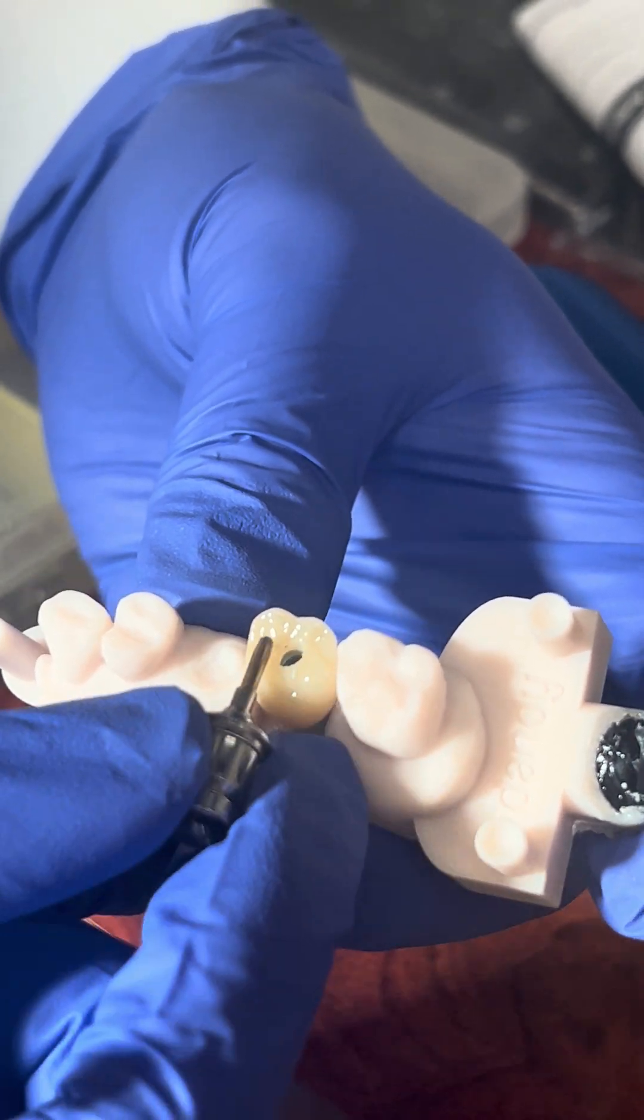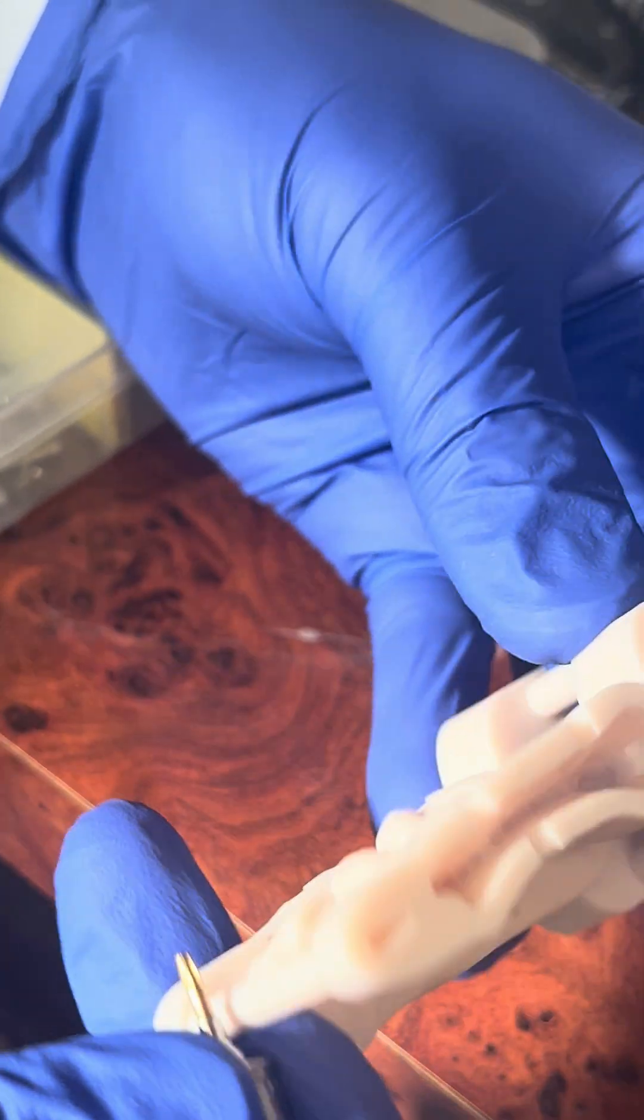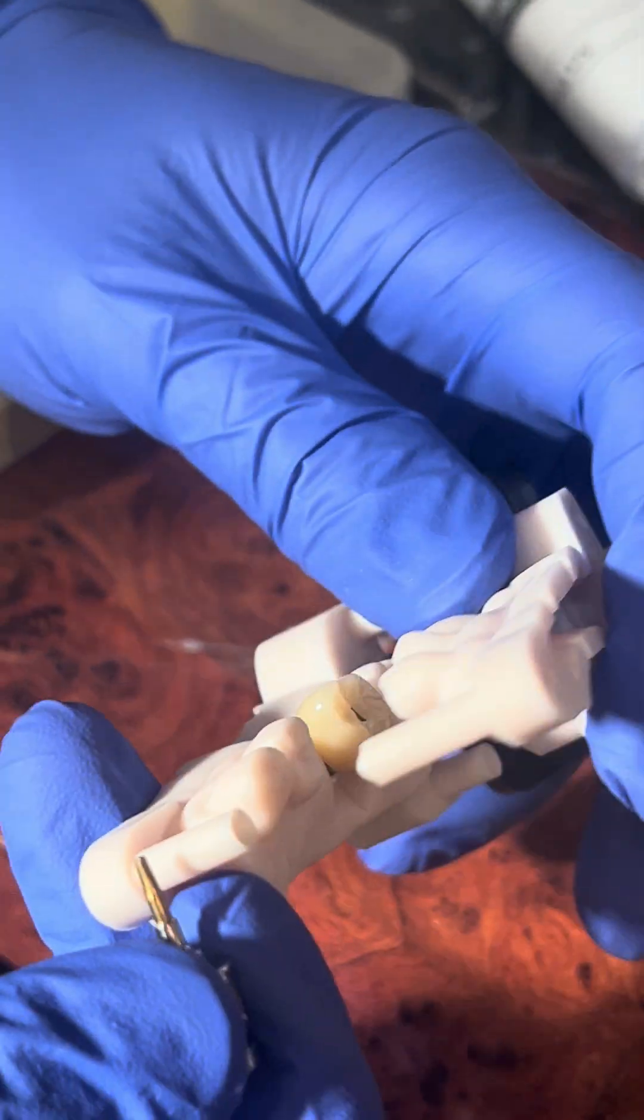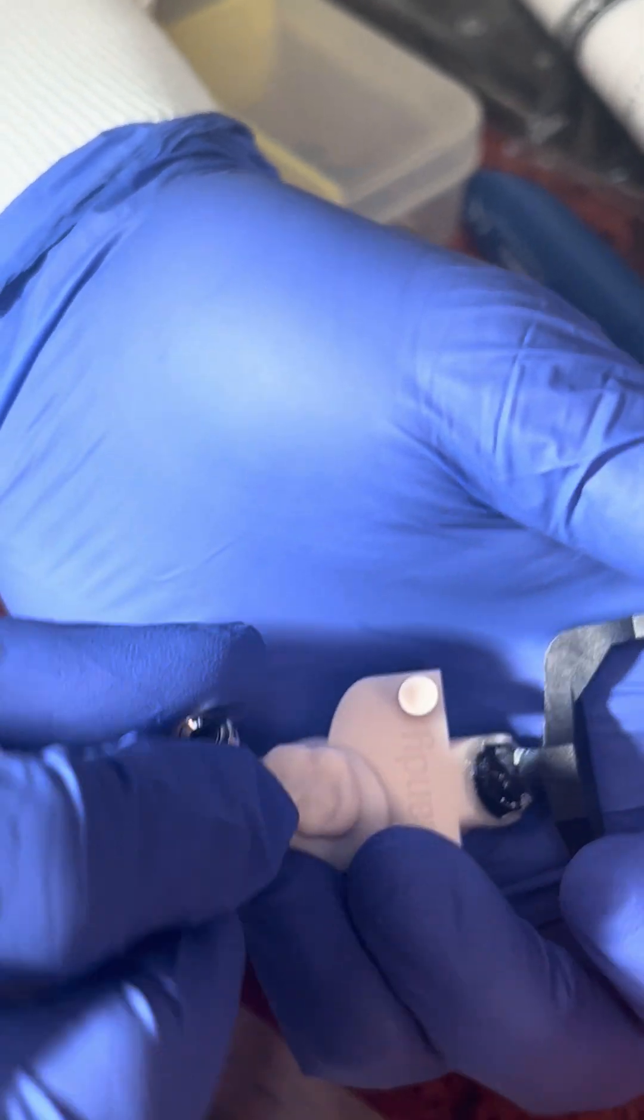You typically receive a case like this from the lab. It could be full arch or half arch. The first thing to do is numb the patient around the gum of the healing abutment. While waiting, we release this.